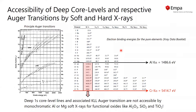Now the lab-based Qantas system comes into play, because when using soft monochromatized X-rays like aluminum or magnesium, we cannot excite the deep core level Auger transitions for chemical state analysis as shown here.